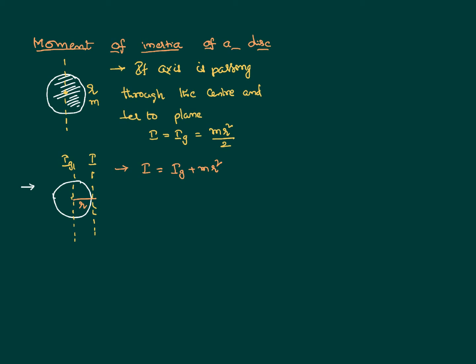According to the parallel axis theorem, the moment of inertia of a body equals the sum of the moment of inertia about an axis passing through the center of gravity and the product of the mass with the square of the distance between the two axes. In this case I_G = MR²/2 and we add another MR², giving a moment of inertia of 3/2 MR².